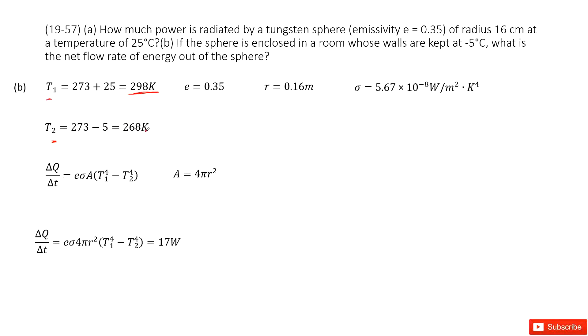Now we need to find the net flow rate of energy, still the power, radiation power for this one. So we can use this equation. And then it changes from T₁ to T₂. So we can write it as there.